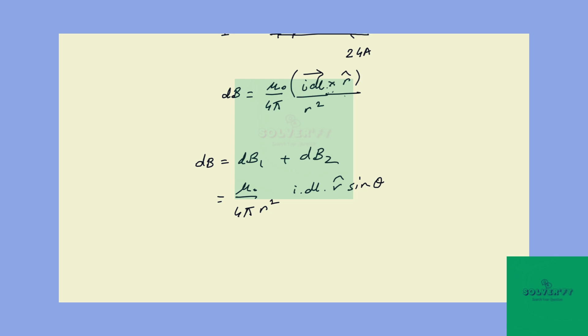Now r cap is a unit vector. You can take sine theta because cross product means sine theta. So this is i1, and you can take i2 dL again sine theta because these values are the same. Mu naught dL sine theta you can take common over 4π r squared, and here we will have i1 plus i2.